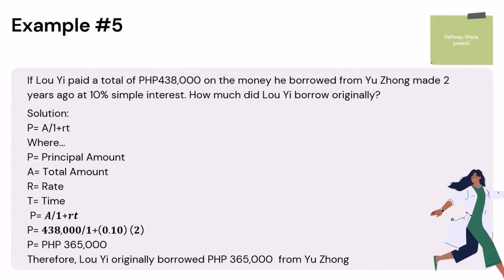In this problem, we are finding the principal — the amount Lu Yi borrowed. Using that formula, we solve for the principal. First, we change the rate into a decimal by dividing by 100. Then we divide ₱438,000 by the sum of 1 and the product of the rate and time. Therefore, Lu Yi originally borrowed ₱365,000 from Yu Tsung.